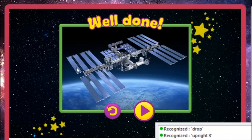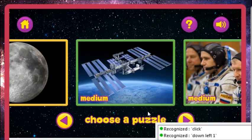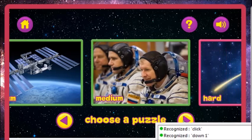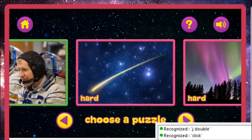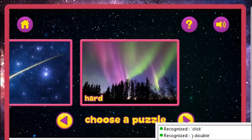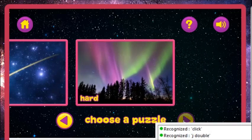Right 5. Down right 4. Down left 1. Click. Right 4. Down 1. Click. Click. J double click. Click. Click. Up left 2. Click.